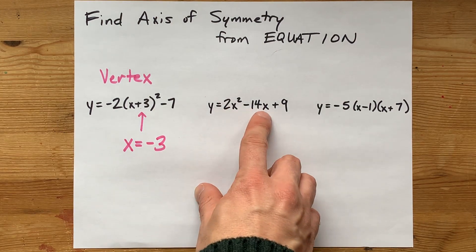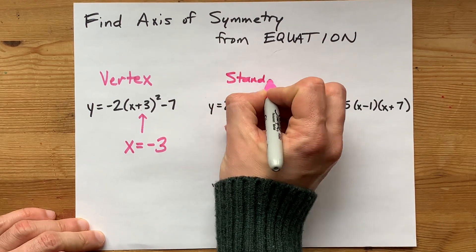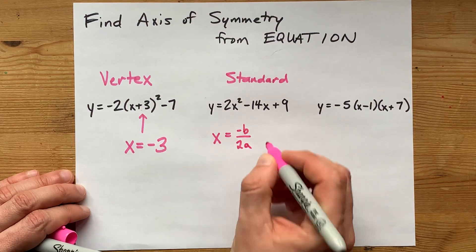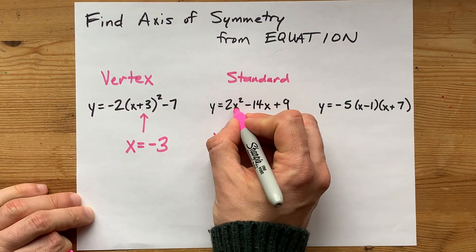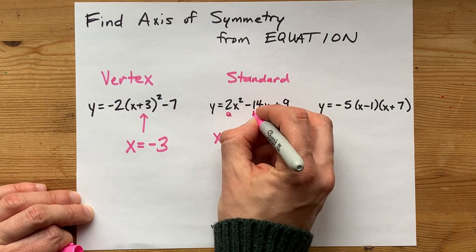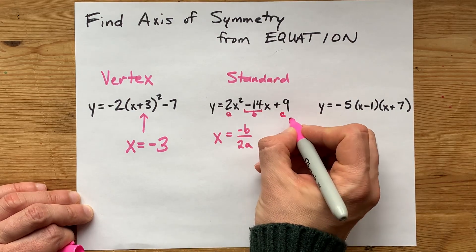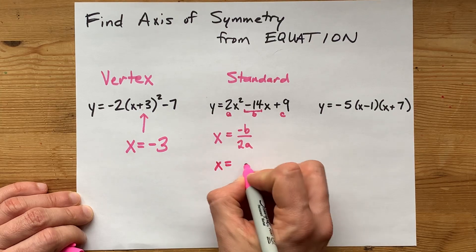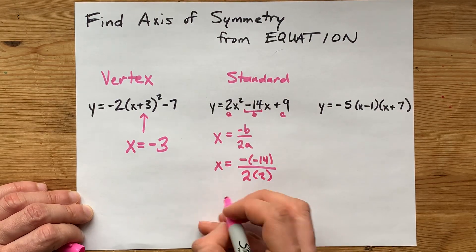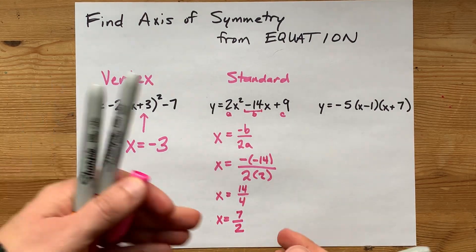If you have an x squared term, an x term, and another term that doesn't have an x, and there are no brackets on any of them, then you have what's called standard form. The shortcut to find the axis of symmetry is negative b divided by 2a. Here, a is the number in front of x squared — not the x squared itself, just the number in front. And b is the number in front of x; here it's negative 14, not including the x. So x equals negative b, which is negative 14, divided by 2 times a, which is 2. That gives 14 over 4, which reduces to 7 over 2, or 3.5 — that's your axis of symmetry.